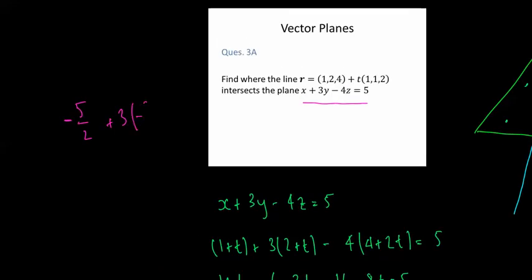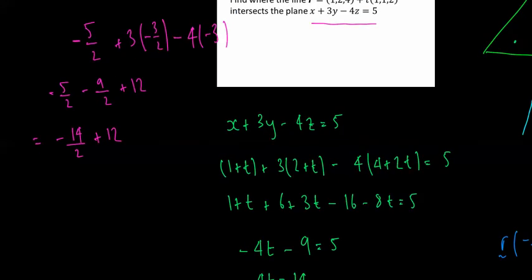So negative 3 over 2 minus 4Z, so minus 4 times negative 3. And we need this to equal 5. Let's check that. Negative 5 over 2 minus 9 over 2 plus 12 equals negative 14 over 2 plus 12. That's equal to negative 7. 12 minus 7 is indeed 5.